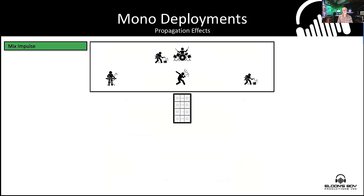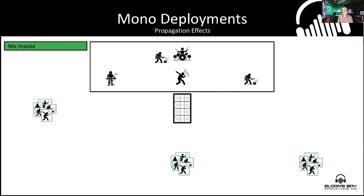Let's talk about mono speaker deployments. In terms of mix impulse, mono gets a green — no matter where you are in the arena, you're only hearing instrumentation from one speaker source, so all those instruments arrive at any listening position at the same time. The mix impulse stays glued together really well. That is probably the primary advantage of mono.